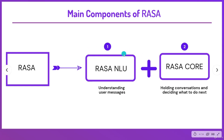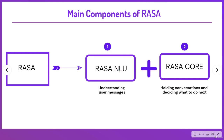Let's take an example of how Rasa NLU works. If the user enters the text 'I need three pizzas of medium size,' Rasa NLU first classifies the text into an intent — let's say it classifies it as the intent 'ordering' — and it extracts a list of entities, which are pizza count and pizza size. So the output is the intent 'ordering' and the entities 'pizza count' and 'pizza size.'